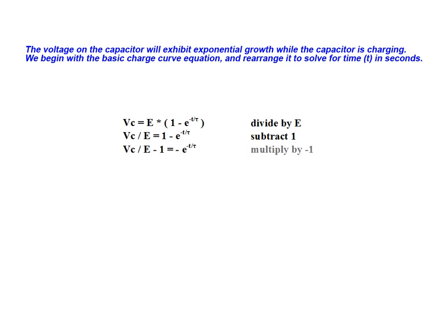Next, we multiply both sides of the equation by negative 1. We now restate the equation in terms of E.